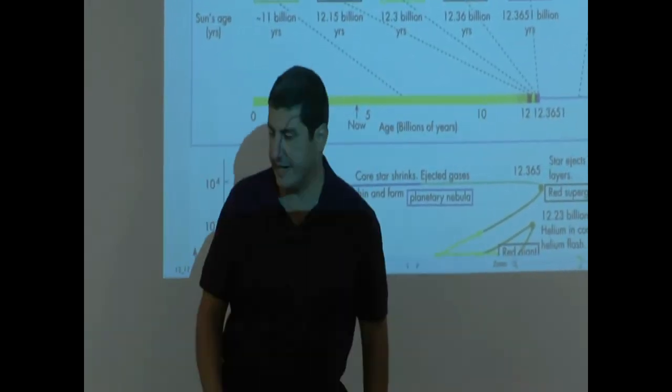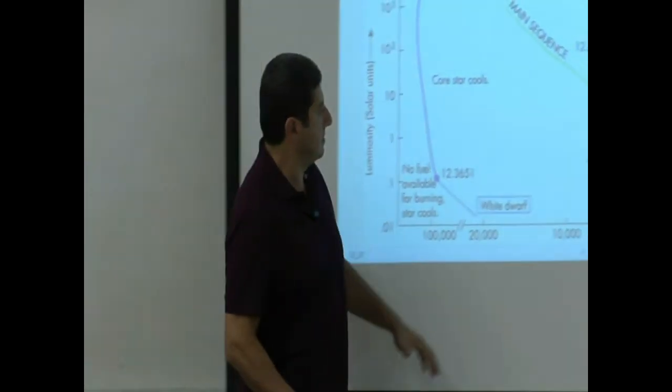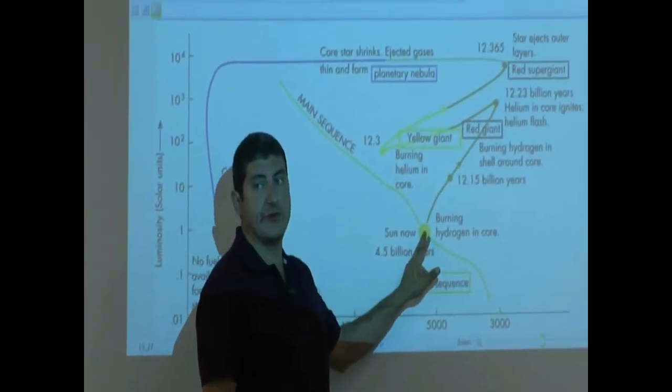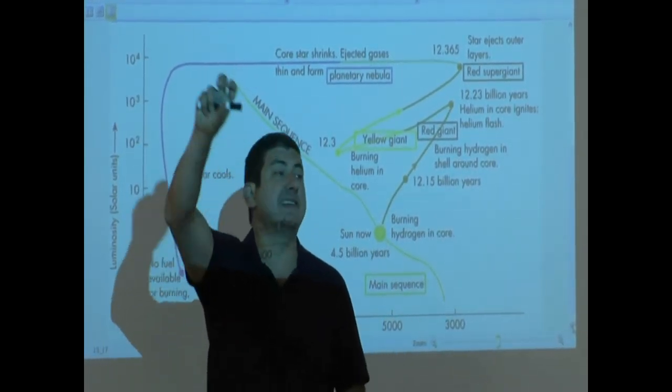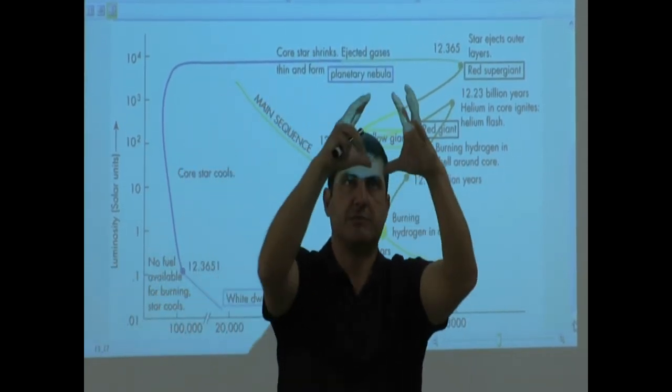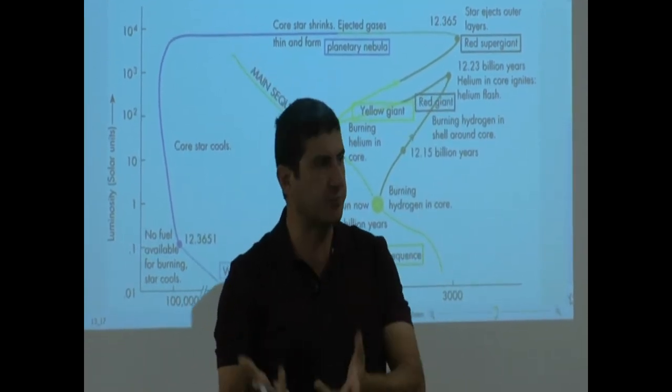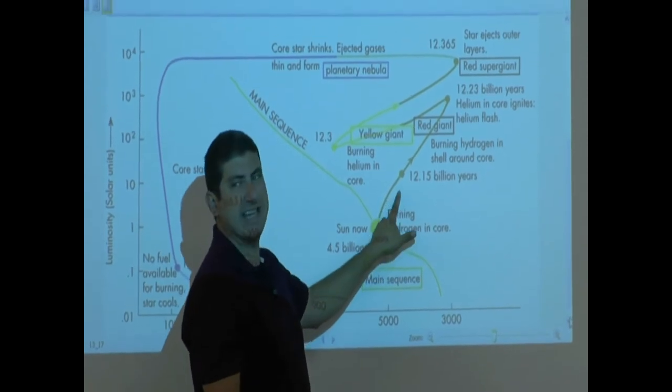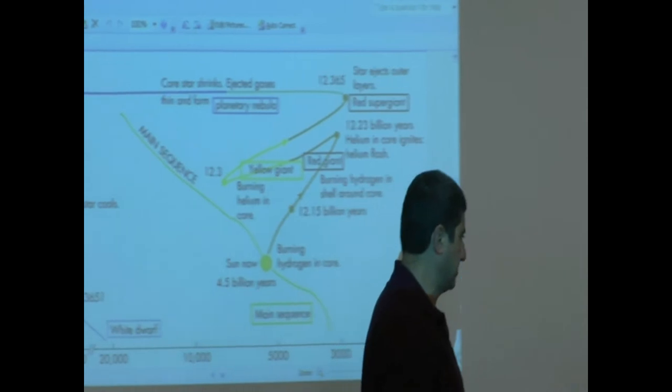If we look at the bottom, it shows to us the evolutionary track that it takes on the HR diagram. This doesn't mean the star actually is moving in the sky, like it's doing this. The star is still standing still, but it's growing and its properties are changing. Because its properties are changing, its place on the HR diagram is changing. Let's draw this one on the board.